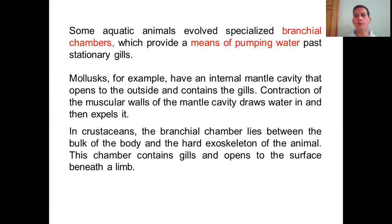In humans, a similar mechanism exists in the lower limbs — the milking of blood vessels through contraction and relaxation moves blood from one point to another. A similar mechanism in the mollusc's mantle cavity uses contraction to move water. In crustaceans, the branchial chamber lies between the body and the hard exoskeleton. This chamber contains gills and opens to the surface beneath the limb — exposed to water but protected by the exoskeleton so it is not easily damaged.